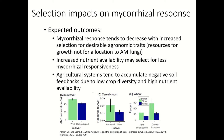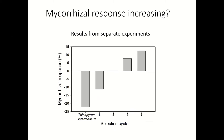We had done a few different studies looking at AMF and Kernza, and we were surprised when we compiled this data from these separate experiments — there's a trend of increasing mycorrhizal responsiveness with selection in Kernza. On this graph, the bars are from separate experiments. On the Y axis is mycorrhizal response in percent: if the bar is below zero, growth is inhibited by AMF; if it's above zero, growth is actually increased. You can see with our selection cycles going from left to right, we're seeing an increase in mycorrhizal responsiveness where there is a positive benefit of having AMF around.